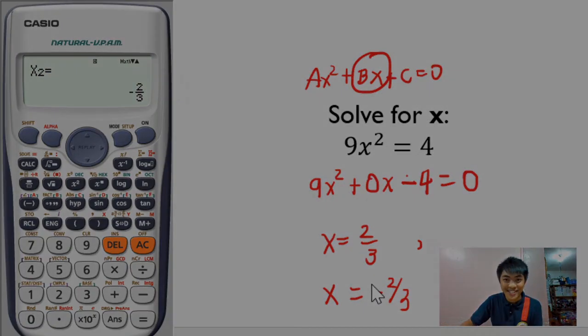Last example. Ano ulit yung first step? Isulat sa general form. 9x squared plus, meron tayong missing term. Kasi kung general term, nagmumuka siyang ganito. Dito kasi sa equation na binigay, wala yung second term. So we place a dummy variable, which is 0x minus 4 kasi si 4 ilipat na lang sa kabila equate sa 0. Naka-general form na siya. I-input natin siya sa calculator.